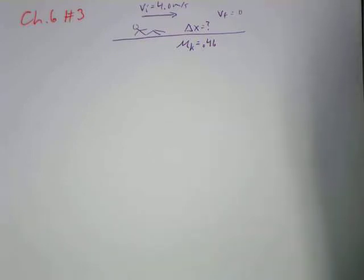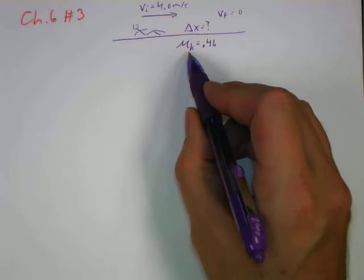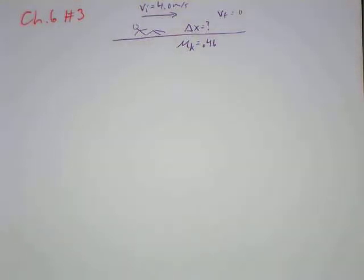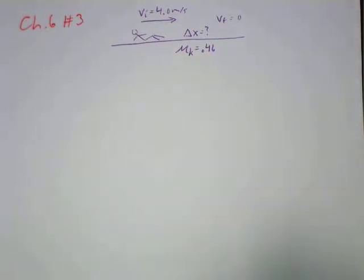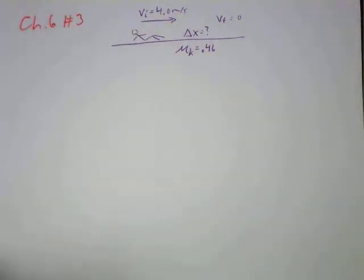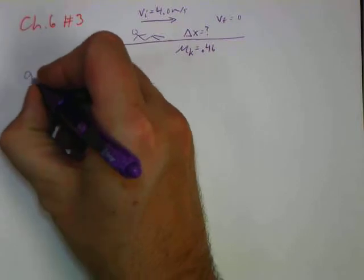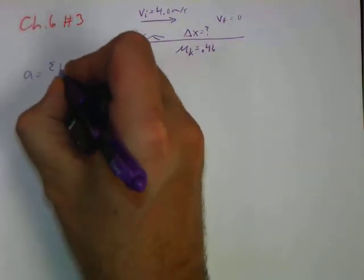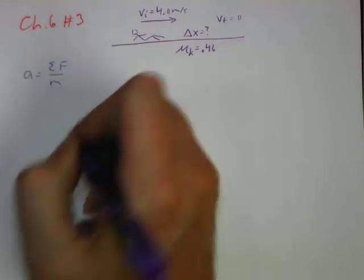Now, that means we need to know the acceleration. Otherwise, there's no way we're ever going to find this. Now, luckily, the coefficient of kinetic friction here lets us know that we can use Newton's second law, F equals ma. So what we're going to do is we're first going to start off with that. Our acceleration is going to be equal to the sum of our forces divided by our mass.